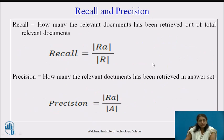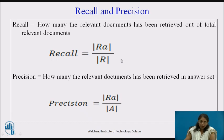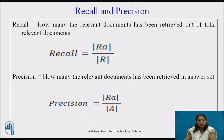We need to calculate two measures: recall and precision. Recall is the fraction of relevant documents that have been retrieved out of the total relevant documents — that is, |R∩A| / |R|. Precision is the fraction of retrieved documents that are relevant — that is, |R∩A| / |A|.